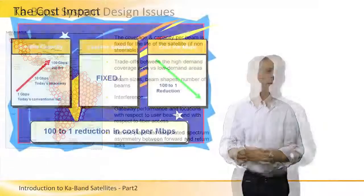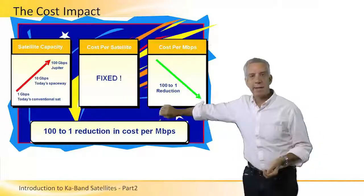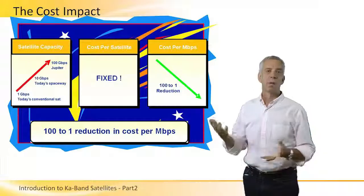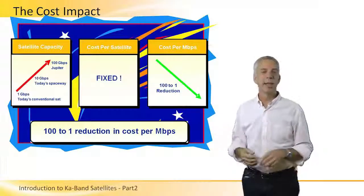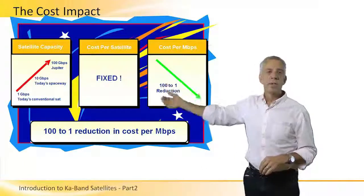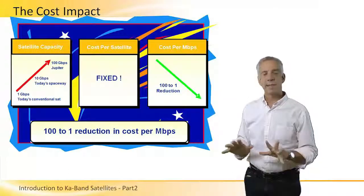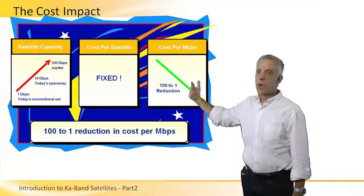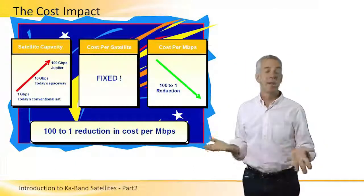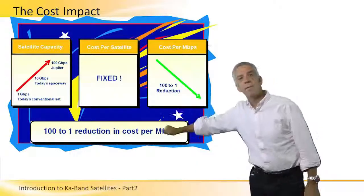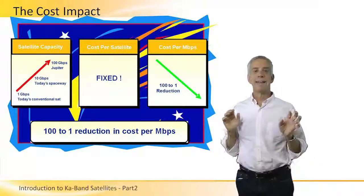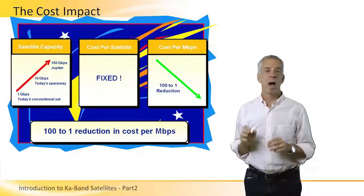The cost impact of KA band is significant. Classic broadcast TV satellites typically have one to two gigabits of capacity, versus a custom-designed data satellite in the hundred-gigabit range. Yet the cost to build and launch a satellite — whether broadcast or KA band high-capacity — is about the same. With similar costs but much more capacity, the cost per bit or cost per megabit is significantly lower with a KA band satellite optimized for data.